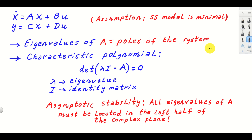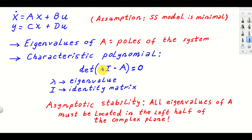The procedure is: first, we construct a characteristic polynomial. We construct the matrix lambda multiplying the identity matrix minus A, where lambda is a general complex number. Then we compute the determinant of that matrix and set it equal to zero. The solutions — the values of lambda for which this characteristic polynomial equals zero — are the eigenvalues of matrix A.